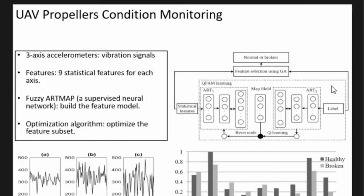For the propeller condition, it's much easier. We just cut off part of that or add some sticky things to the propeller. We also use a fuzzy neural network called fuzzy ARTMAP, which is supervised learning because we know what will happen to the propeller.